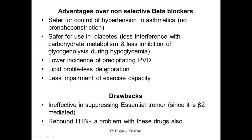What are the drawbacks? They are ineffective in suppressing essential tremor. Essential tremor is mediated through beta-2 receptors, and by blocking beta-2 receptors you can have a therapeutic effect in essential tremor. That cannot be achieved with cardioselective beta blockers because they mainly block beta-1 and do not have much effect on beta-2. Also, rebound hypertension does not improve even with a cardioselective beta blocker — if you suddenly withdraw, you will still have rebound hypertension just as with non-selective beta blockers.